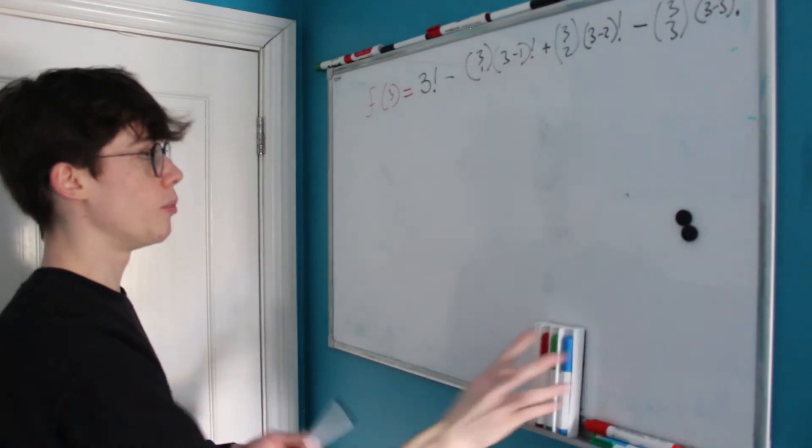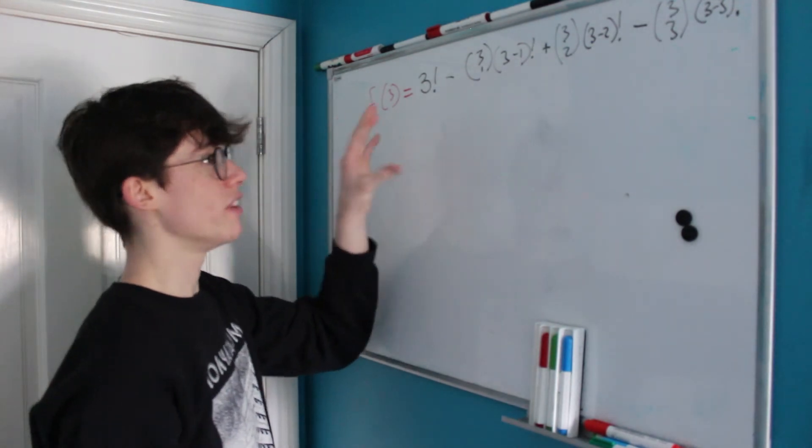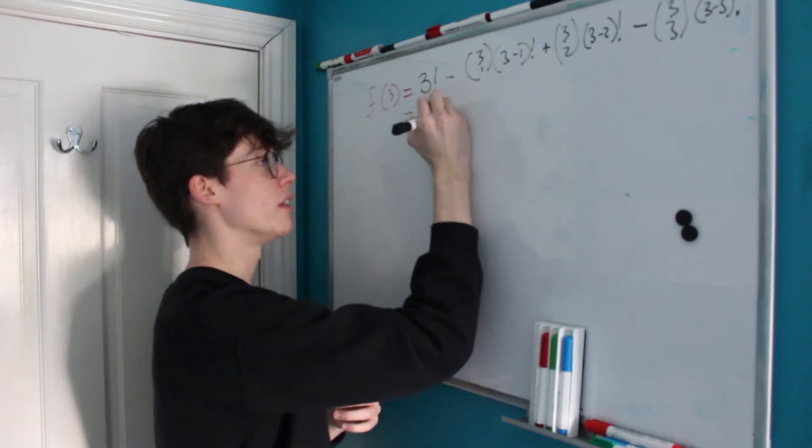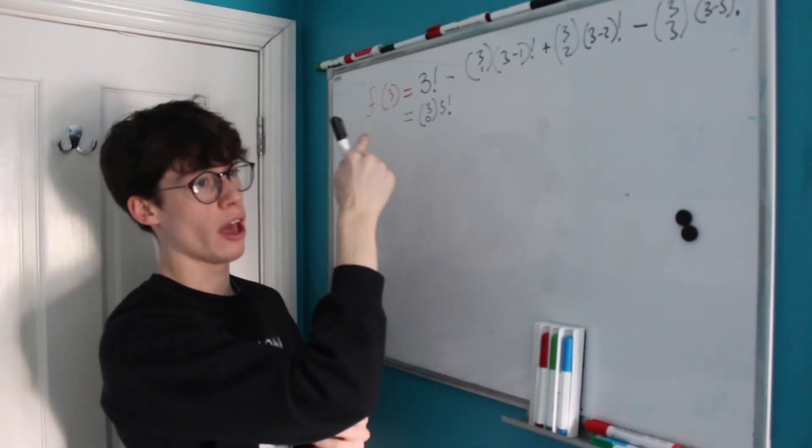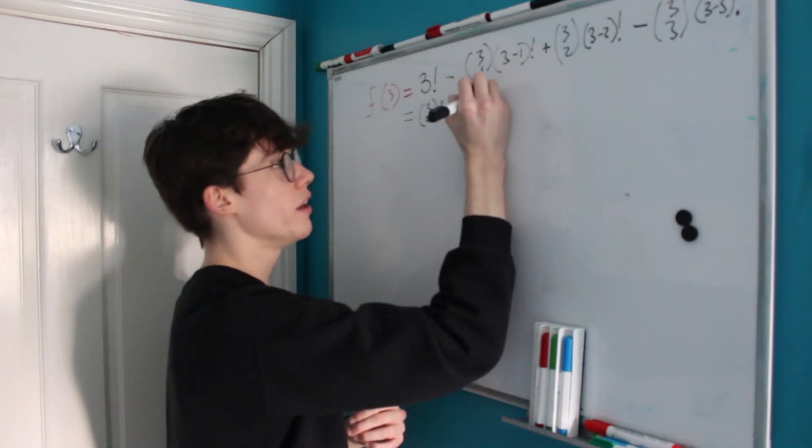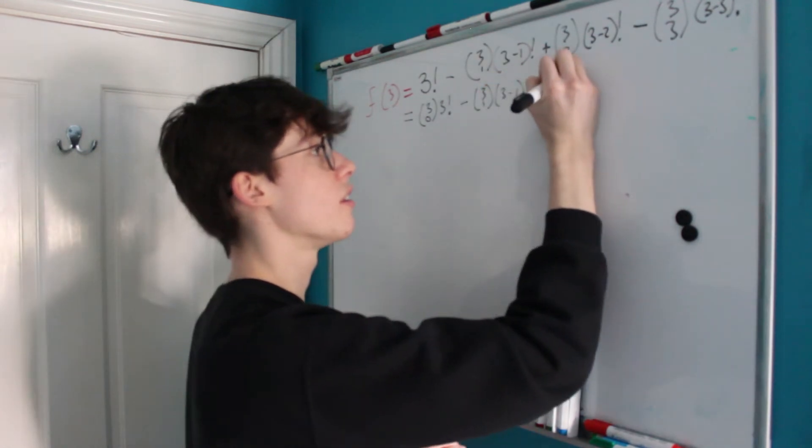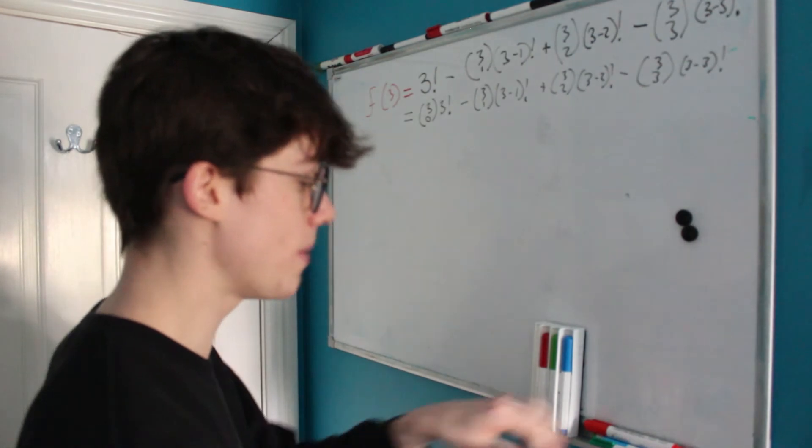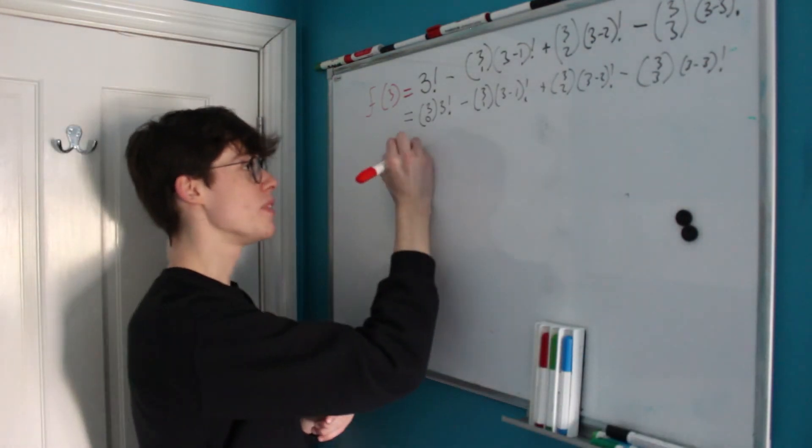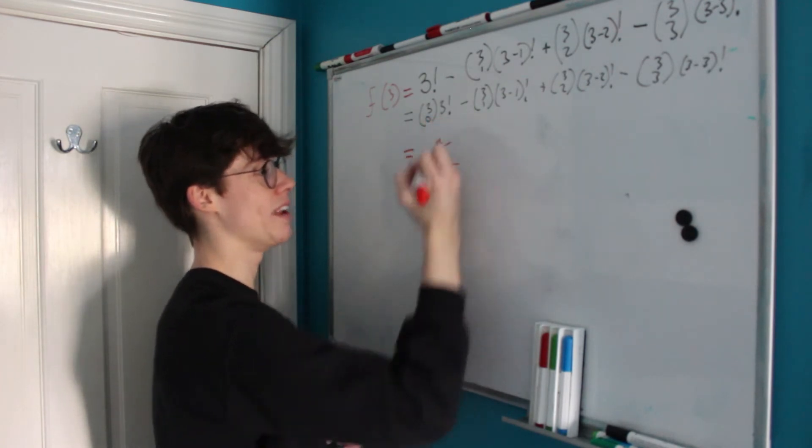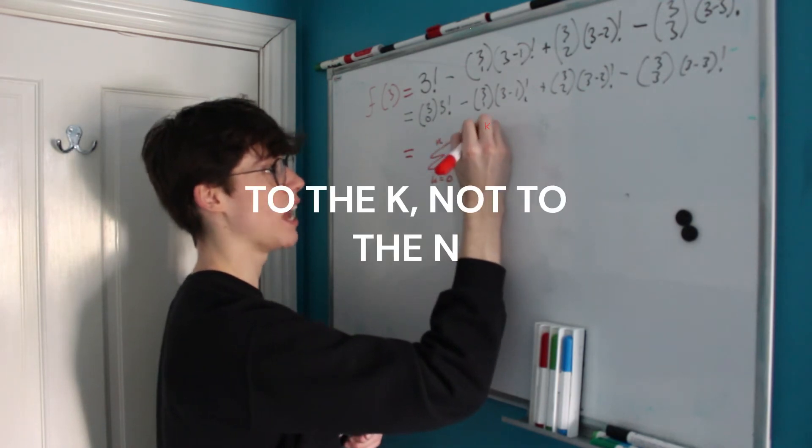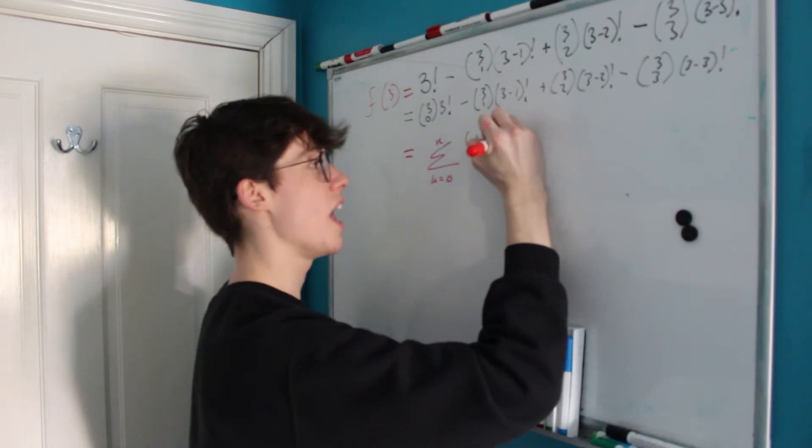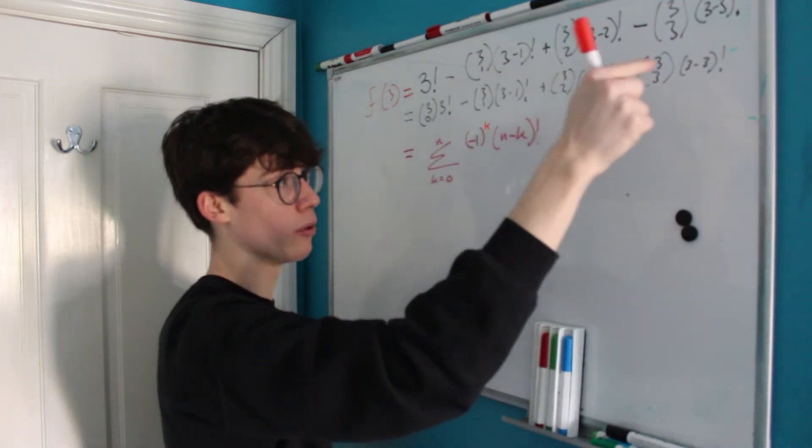So we've now ended up with this sum and just to give you a bit of clarity I'm going to rewrite this as 3 choose 0 times 3 factorial minus 3 choose 1 times 3 minus 1 factorial plus 3 choose 2 times 3 minus 2 factorial minus 3 choose 3 times 3 minus 3 factorial. This should show you the pattern. This is a sum from k equals 0 to n of negative one to the n so that this negative one will give us our alternating positive and negative.